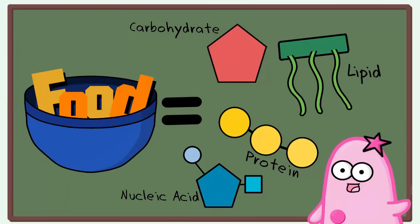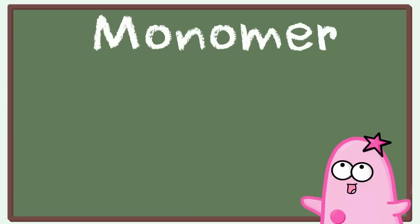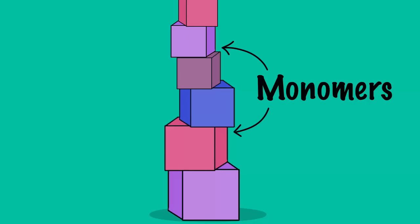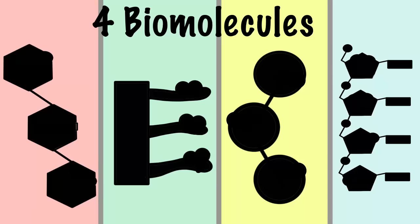Before we get into details about the four biomolecules, we need to talk about one very important vocabulary word: the word monomer. A monomer is a building block. If I had some large substance, the parts that make up the substance are called monomers, just like building blocks. We are going to talk a lot about monomers today because we need to understand what the biomolecules are made of. And we need to understand biomolecules because they are building components of life.